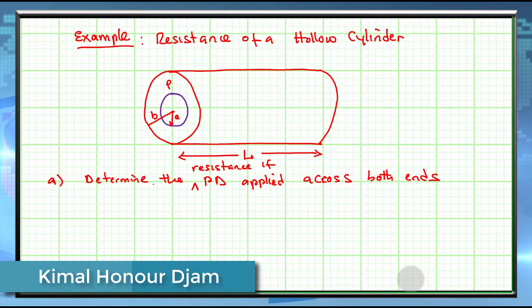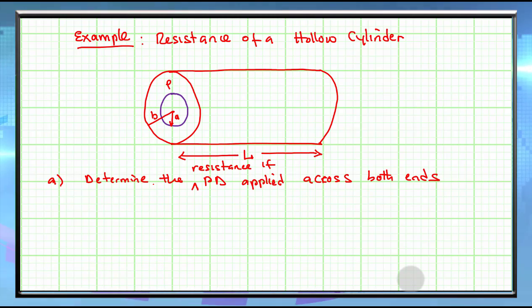Example 1: We have a hollow cylinder of length L, inner radius A, and outer radius B. The material has a resistivity of rho. Part A of the question is to determine the resistance.